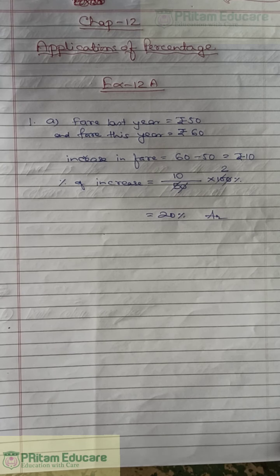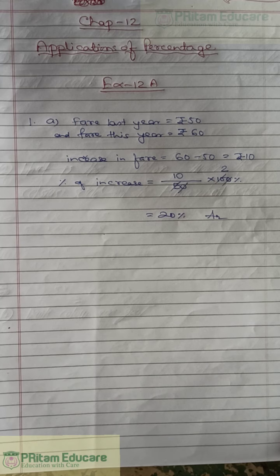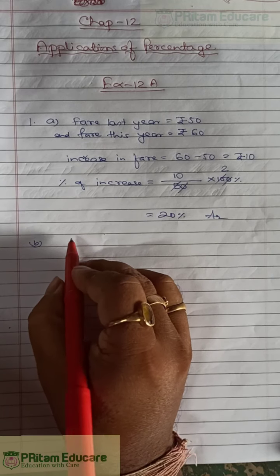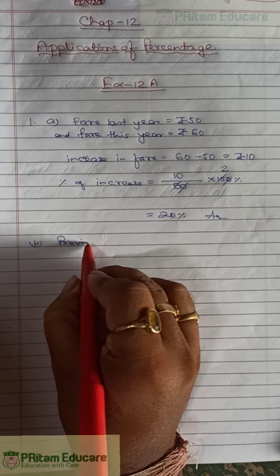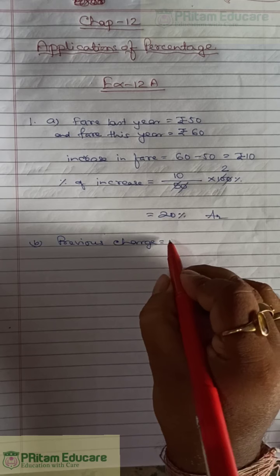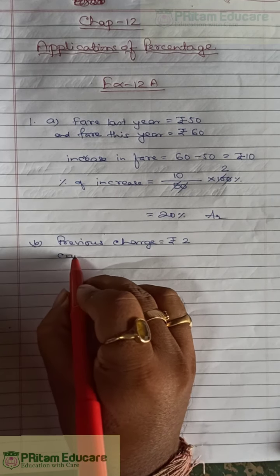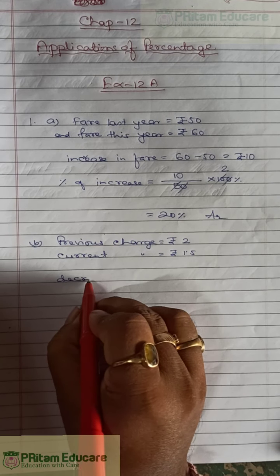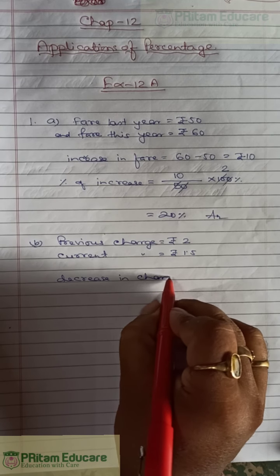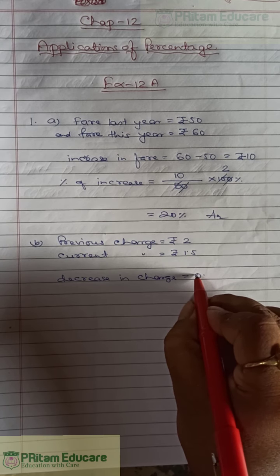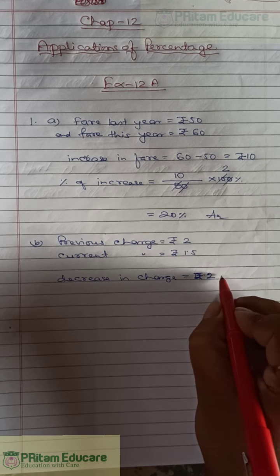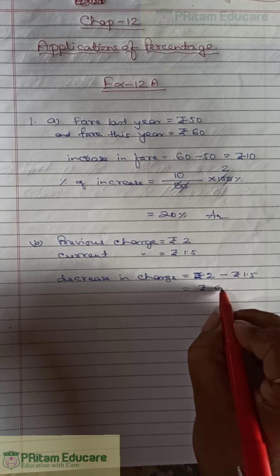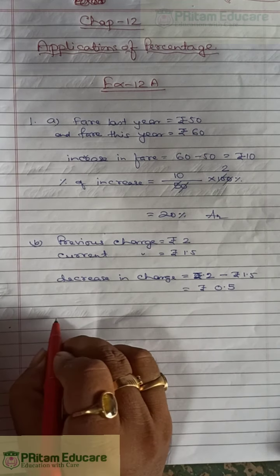Question 1b: Five years back, the telephone charges per minute were rupees 2, and now they are rupees 1.50 per minute. Earlier it was 2, now it is 1.5, so this is a decrease. Previous charge: rupees 2. Current charge: rupees 1.5. Decrease in charge = rupees 2 minus rupees 1.5 = rupees 0.5.